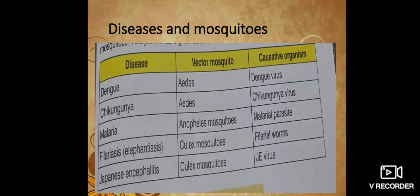Filariasis and Japanese Encephalitis are two diseases caused by Culex mosquitoes. Another name for Filariasis is Elephantiasis, because when a person has Filariasis, their legs become swollen like an elephant. The causative organism of Filariasis is Filarial worms, and the causative organism of Japanese Encephalitis is J.E. virus — J.E. being the short form of Japanese Encephalitis.